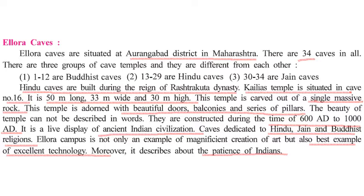The Hindu caves were built during the reign of the Rashtrakuta dynasty. Among those Hindu caves, the Kailash Temple in cave number 16 is the most famous. That particular temple is 50 meters long, 33 meters wide, and 30 meters high. The speciality of this temple is that the whole temple has been created out of a single rock — an entire small hill carved from inside to make a temple, with beautiful doors, balconies, and a series of pillars. It is believed to have been constructed around 680 to 1080 AD.